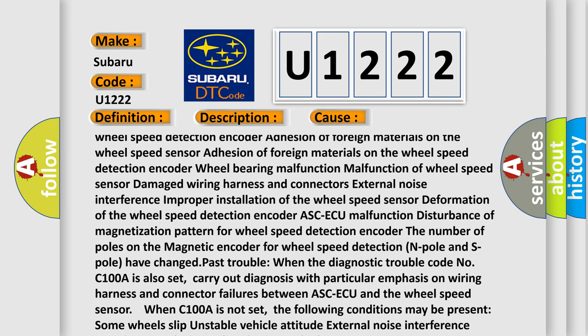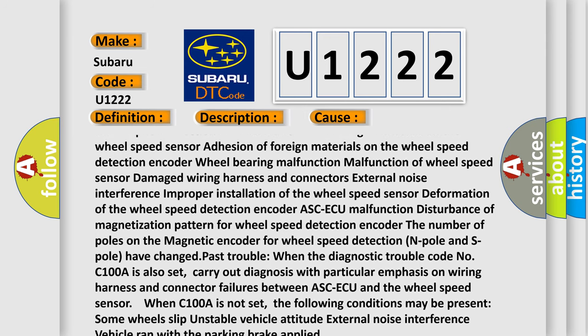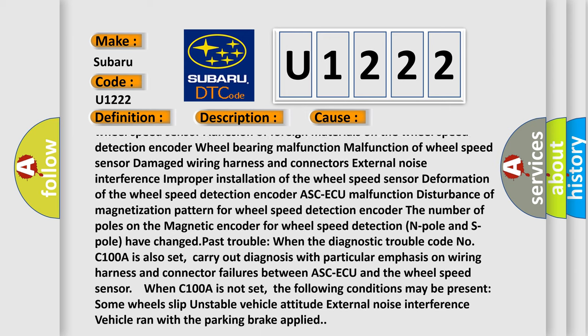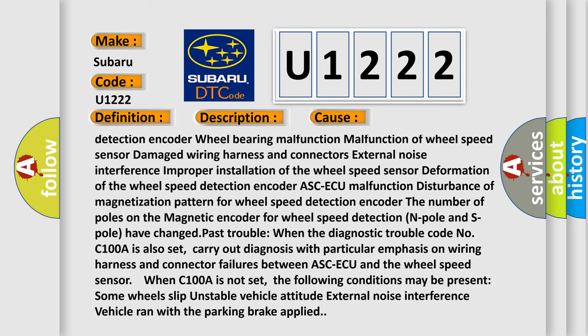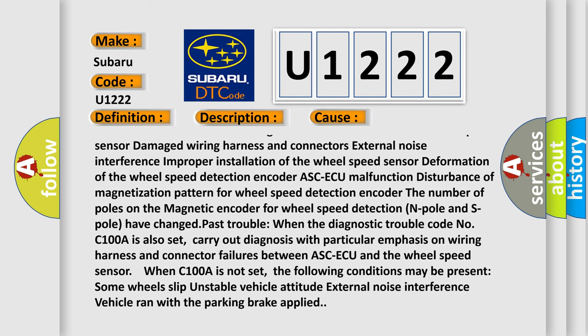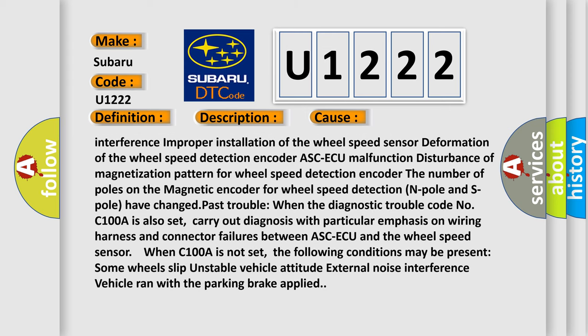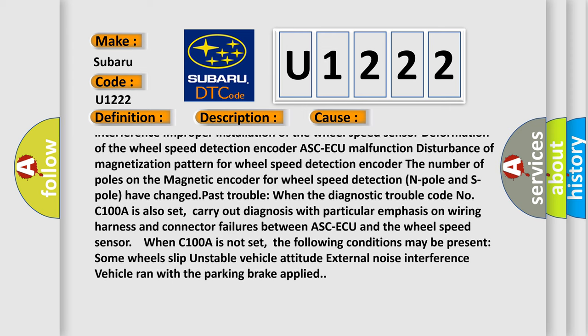ASC-ECU malfunction, disturbance of magnetization pattern for wheel speed detection encoder. The number of poles on the magnetic encoder for wheel speed detection, N pole and S pole, have changed. Past trouble: when the diagnostic trouble code...